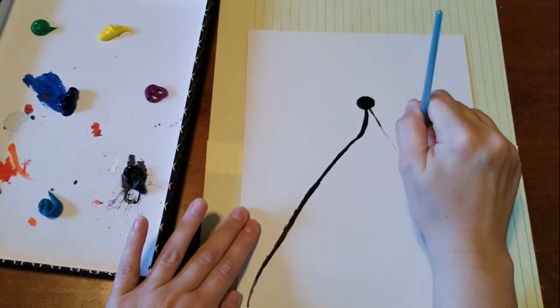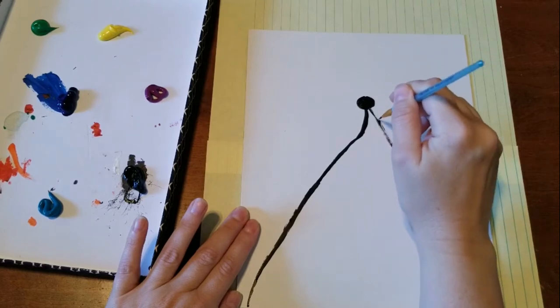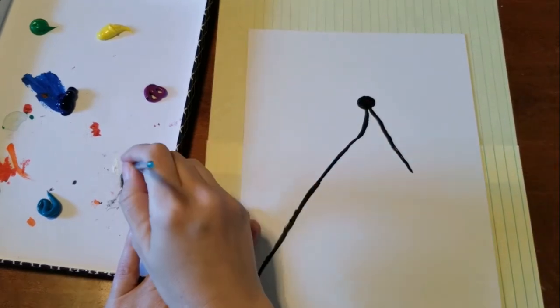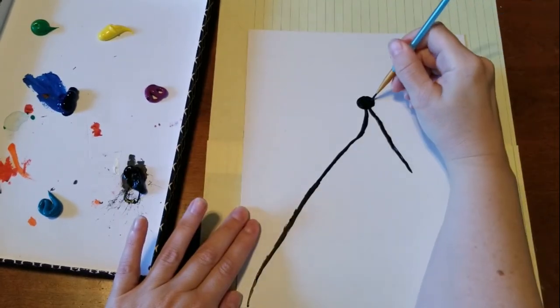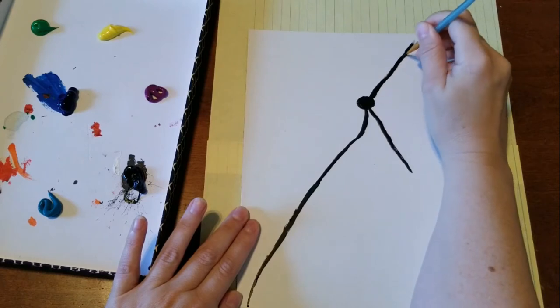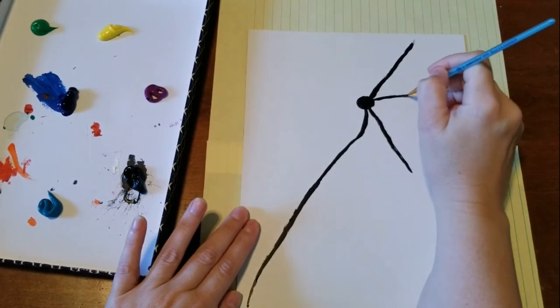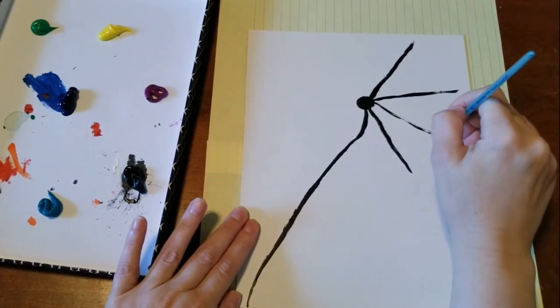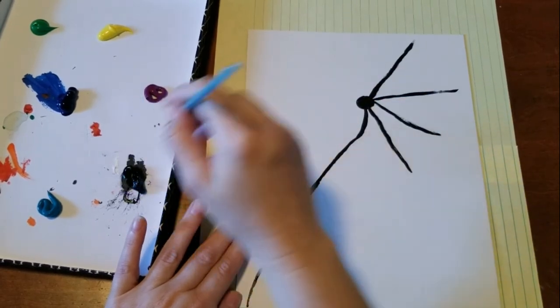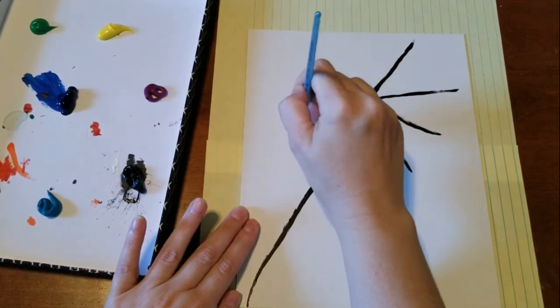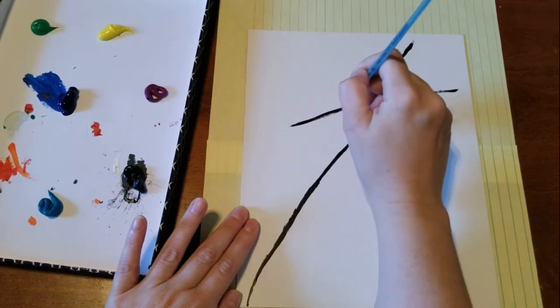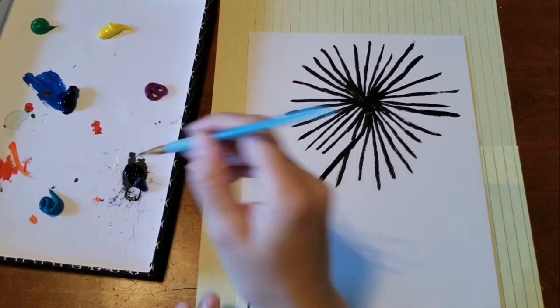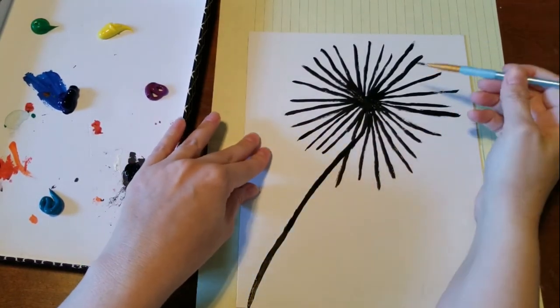And then you're going to take your brush and you're just going to make some little lines going out, and you're going to go all the way around the flower. So I'll just show you a few more, and just do like this. Another one here, another one here. You'll just continue doing like so.